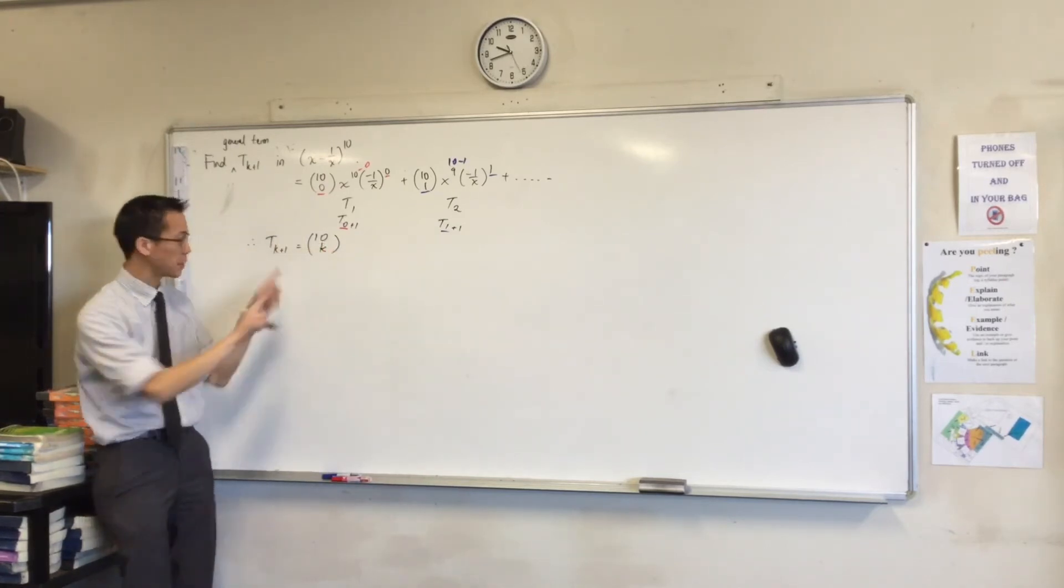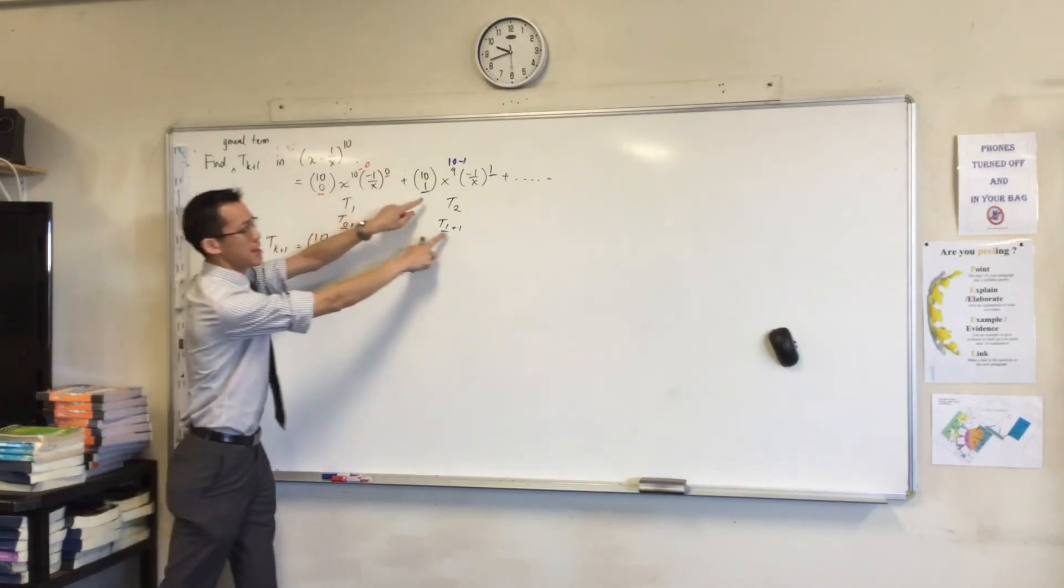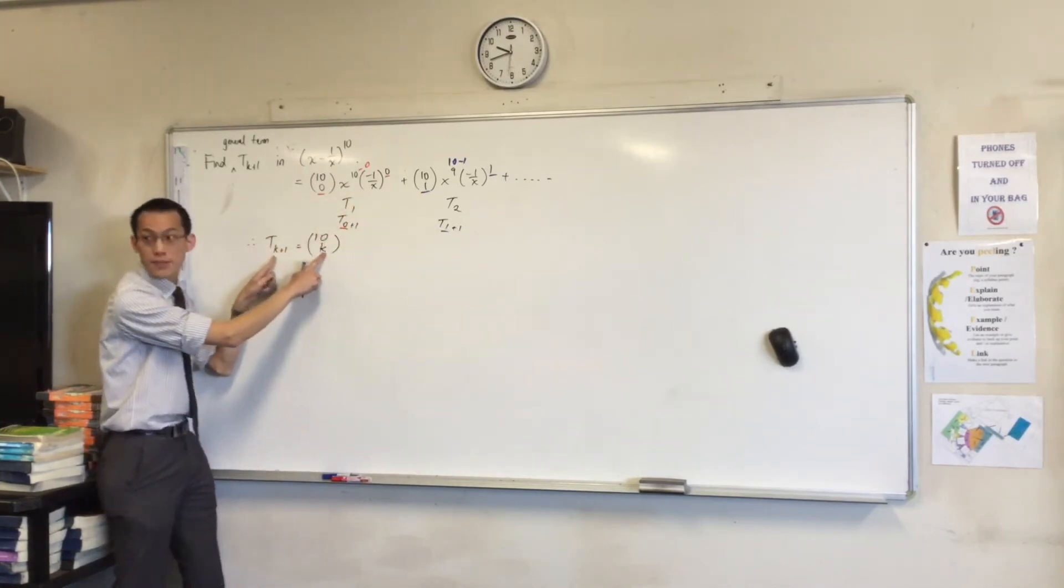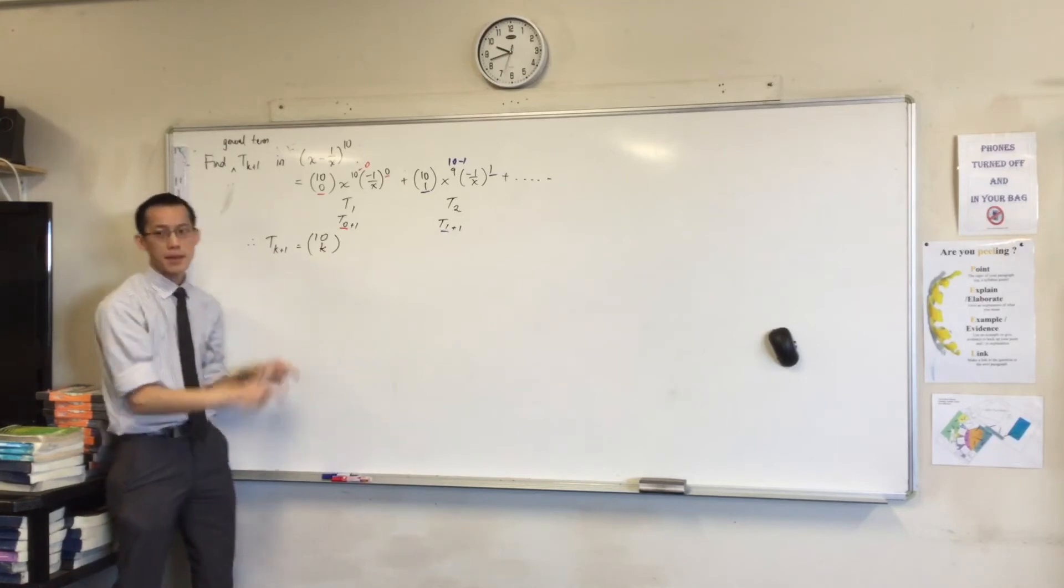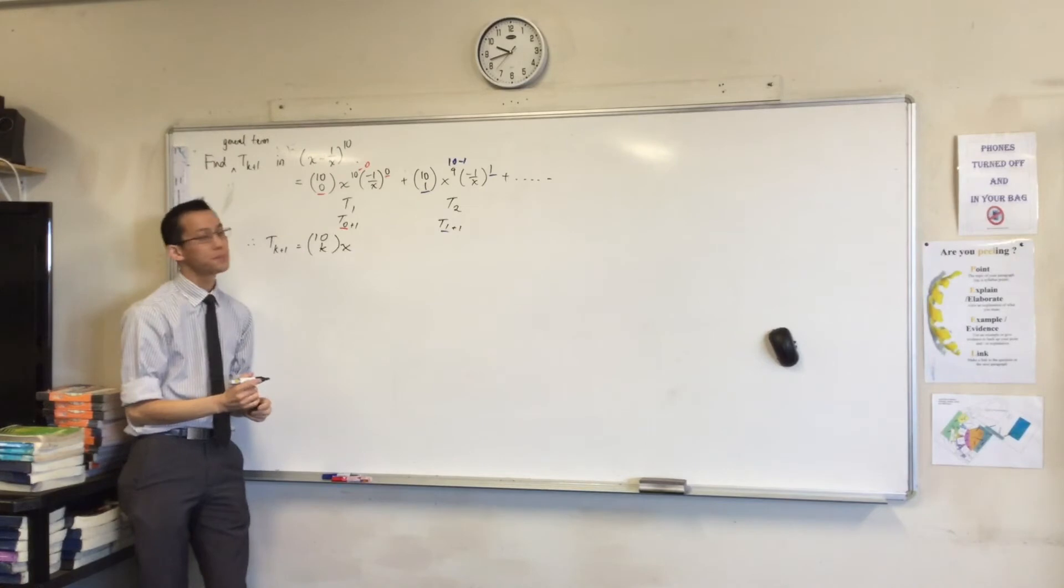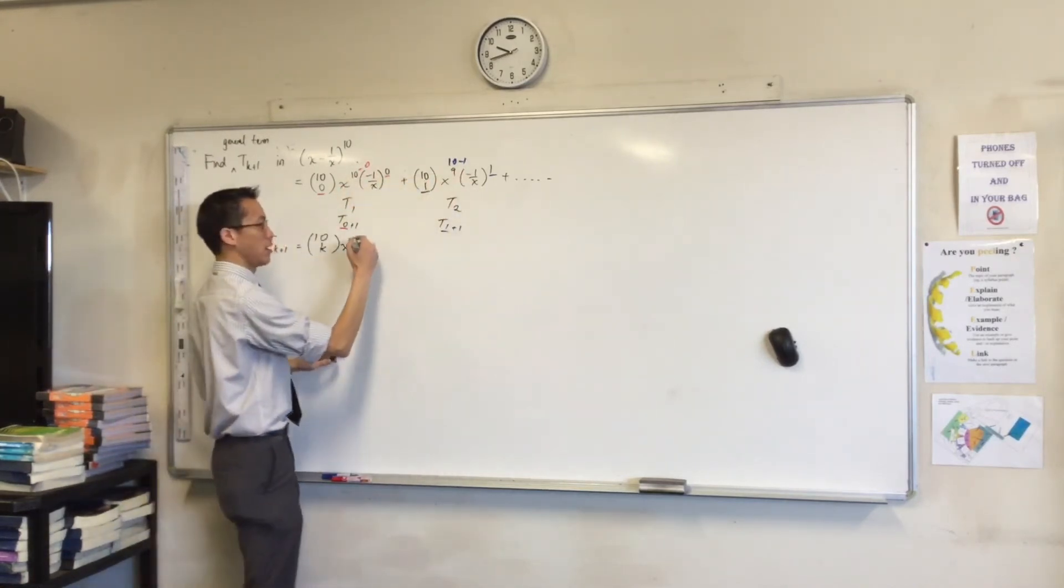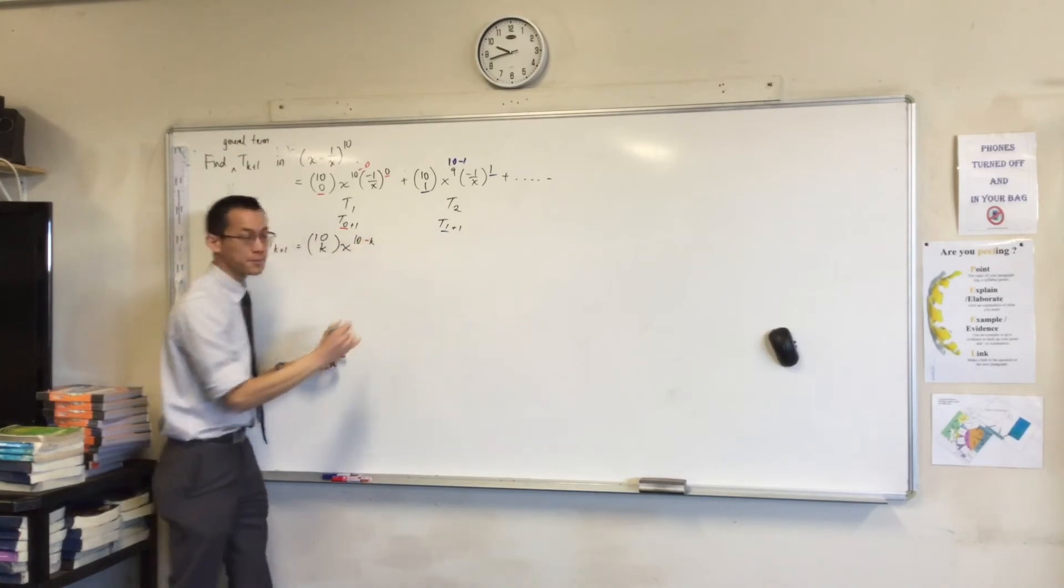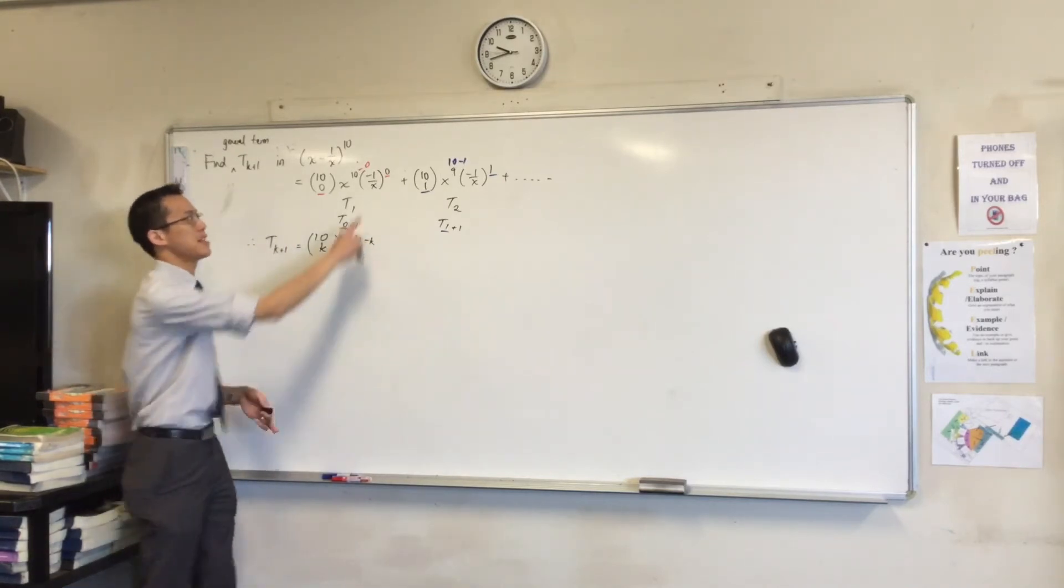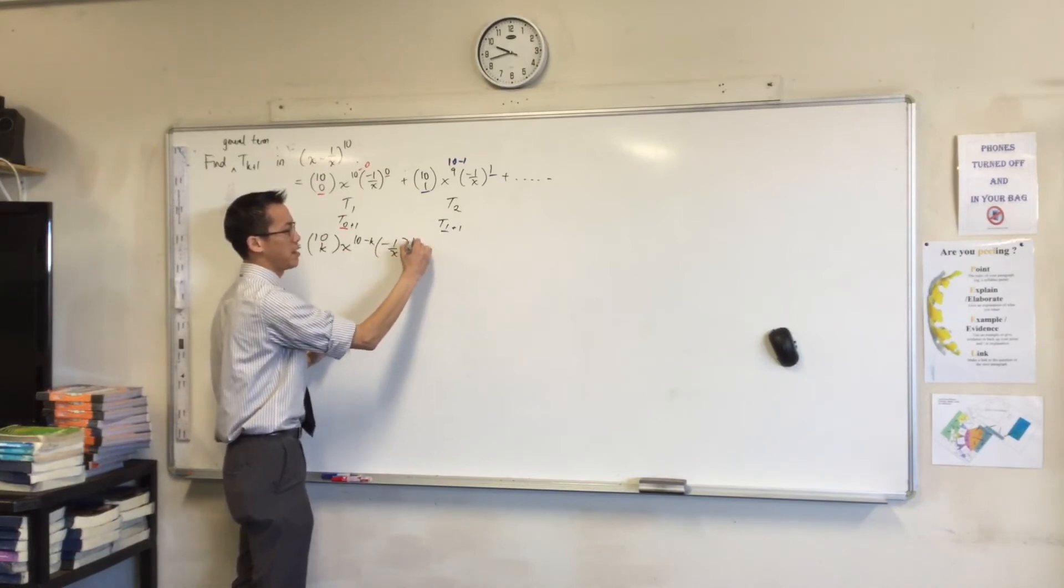It's because this can change. This changes, you see that? See how these match, and these match? That means these have to match. How many of the x terms am I going to have? 10 minus k. Look, see? 10 minus 0, 10 minus 1, 10 minus 2, 10 minus k. And then lastly, how many of these negative 1 over x terms will there be? There are going to be k of them.